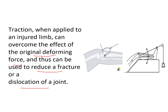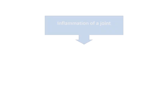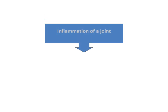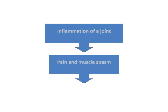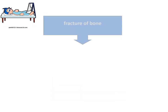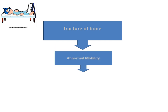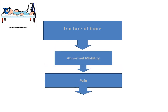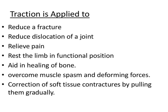That is why we apply traction: to overcome the deformity and reduce the fracture or dislocation of a joint. When traction is applied, the fracture is reduced and the deformity is corrected. To summarize: whenever there is inflammation of a joint, pain and muscle spasm leading to deformity, or a fracture with abnormal mobility leading to pain and deformity, traction prevents that deformity.